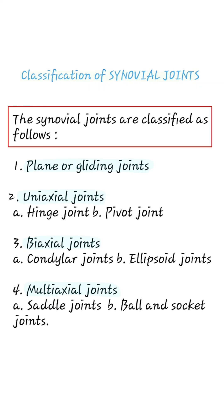In this video we are going to see about classification of synovial joints. The synovial joints are classified as follows: plane or gliding joints, uniaxial joints — which includes hinge joints and pivot joints.